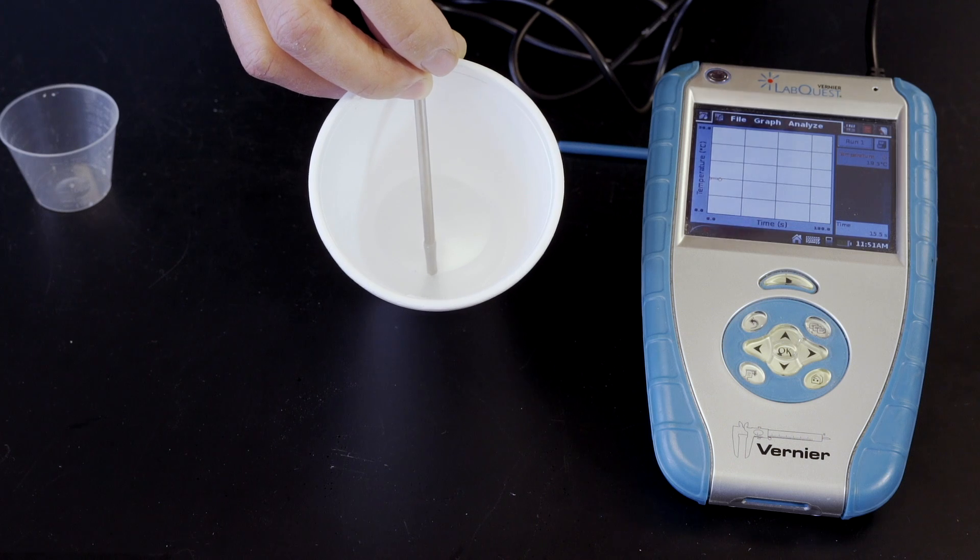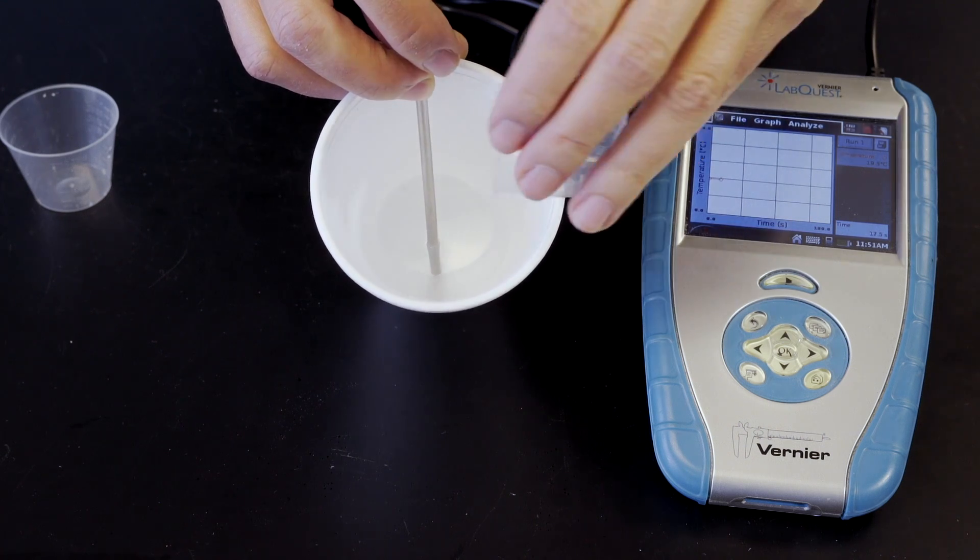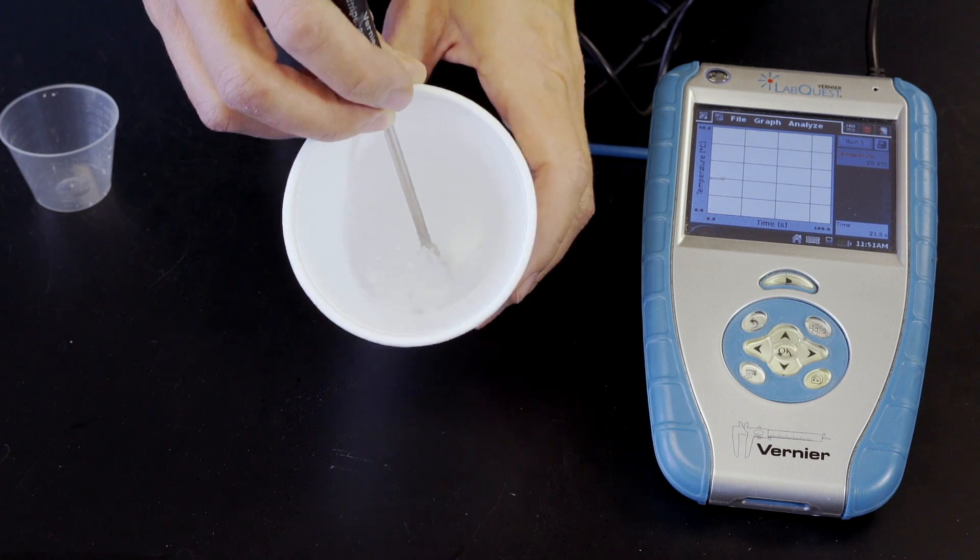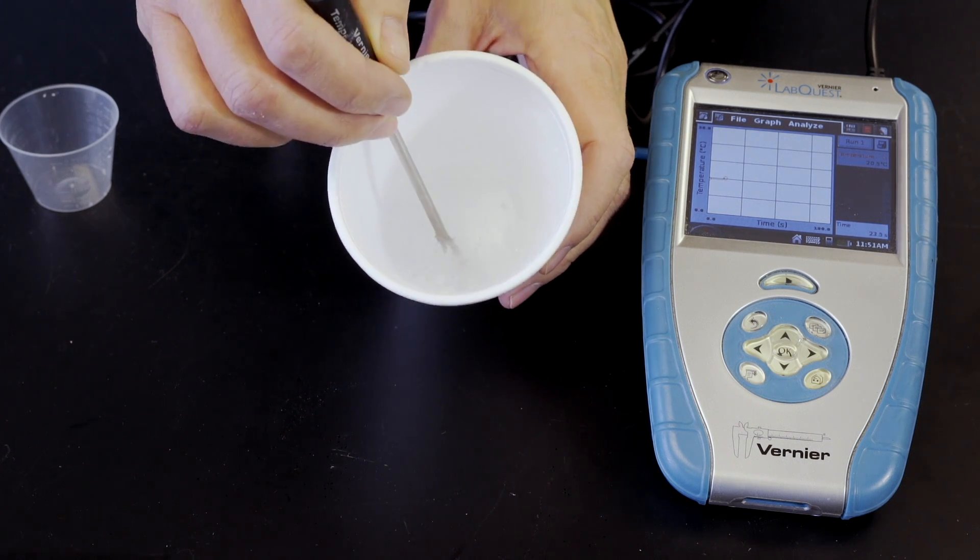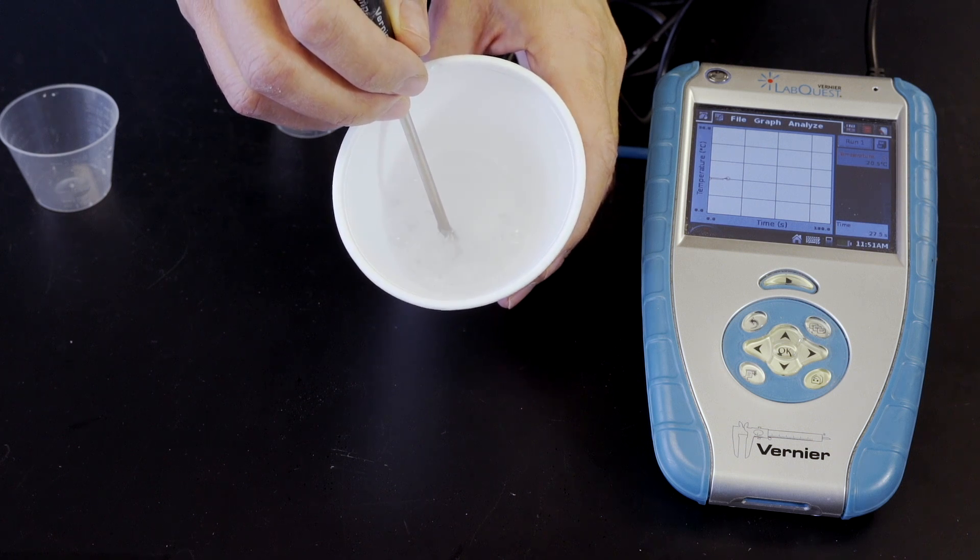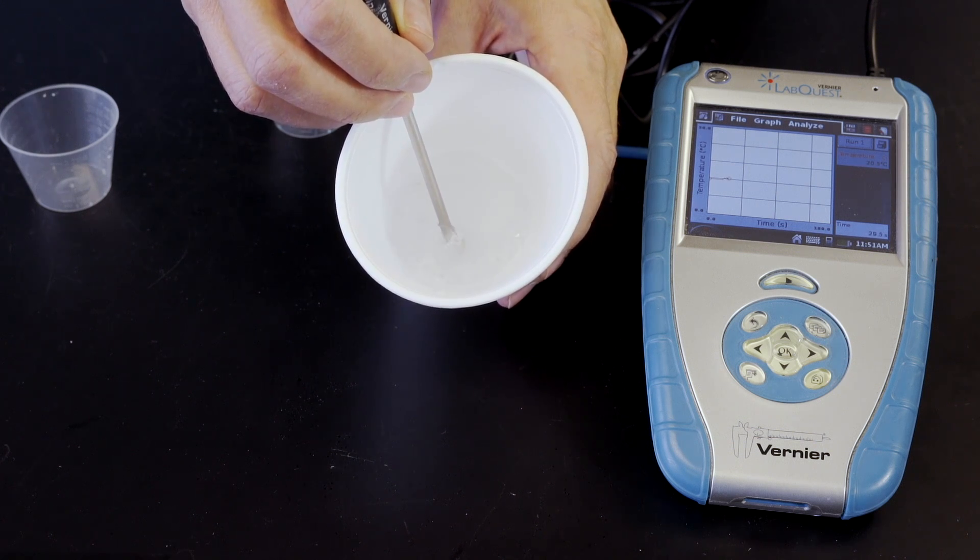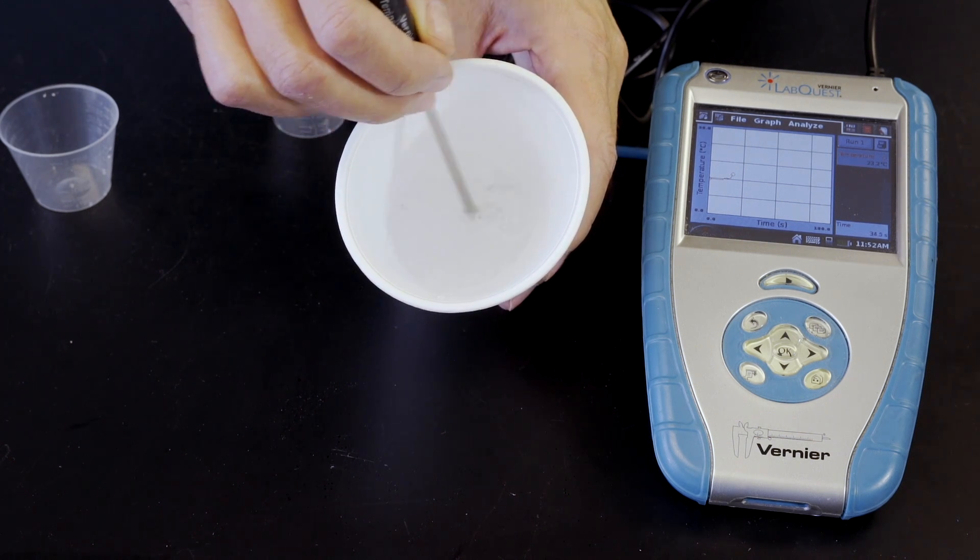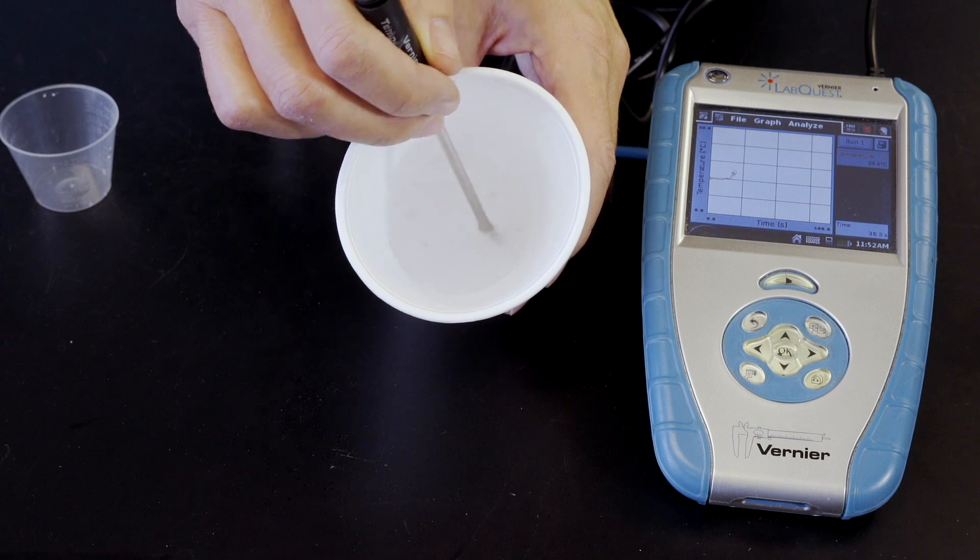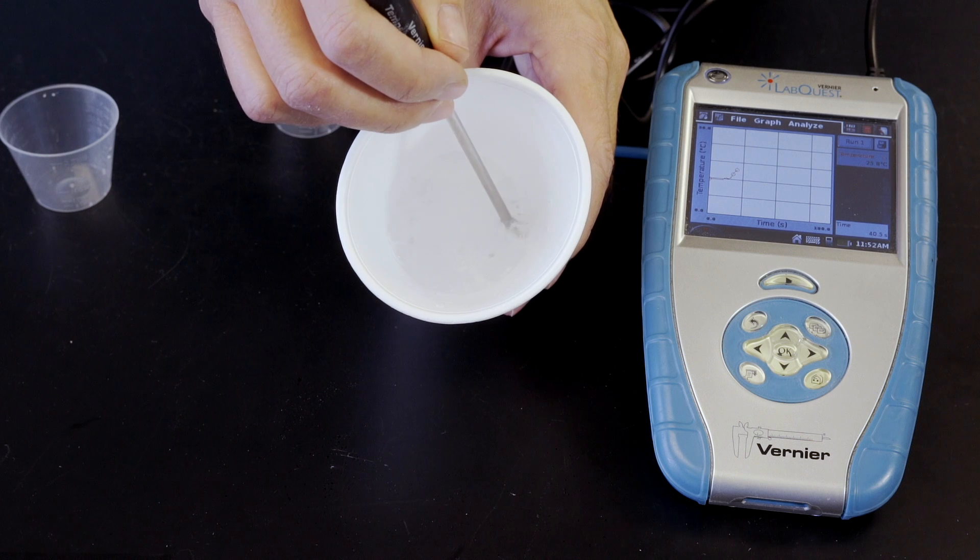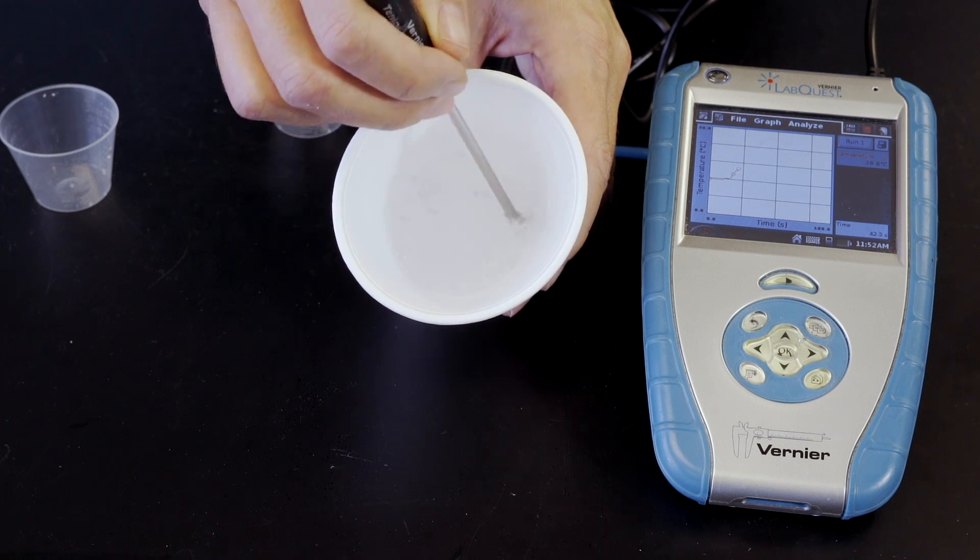Next, several nuggets of magnesium metal are added to the acid. Again, look for the four clues from the last lab that indicate a chemical reaction is taking place.